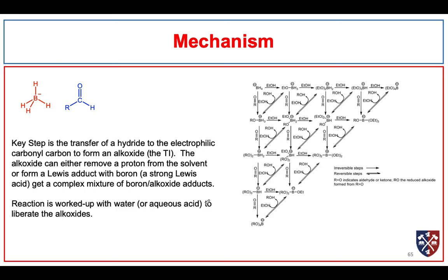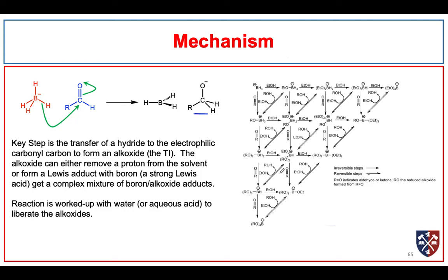The key step in the mechanism is the transfer of a hydride to the electrophilic carbon atom to form an alkoxide, which is the tetrahedral intermediate. This alkoxide can do several things — it can remove a proton from the alcohol solvent, which would lead directly to the product, but most likely it's going to coordinate with the electron-deficient boron that results from the hydride transfer. At the end of the reaction, we have a complex mixture of boron alkoxide adducts involving either the alcoholic solvent or the alcohol product coordinating with the boron. We release the alkoxides by working up with water or aqueous acid to get our alcohol as the final product.